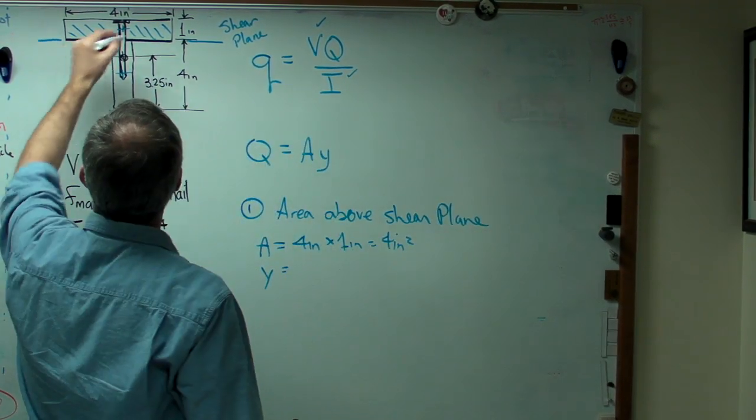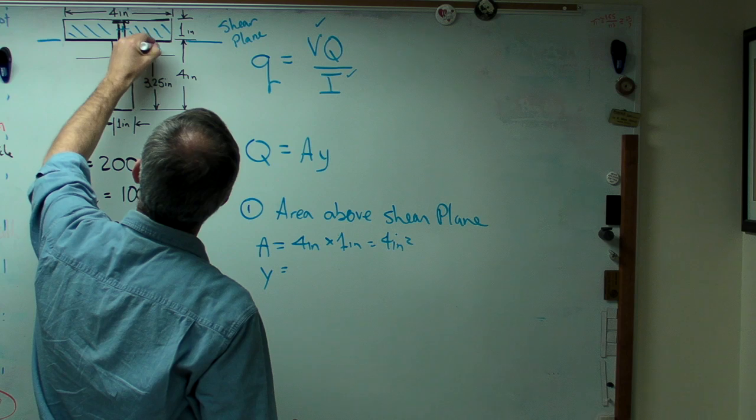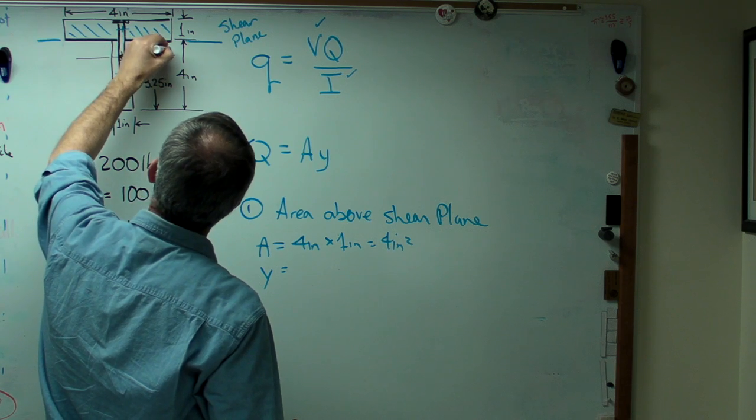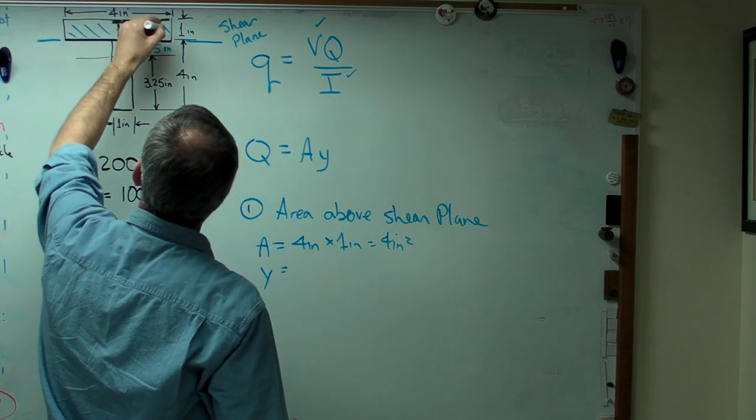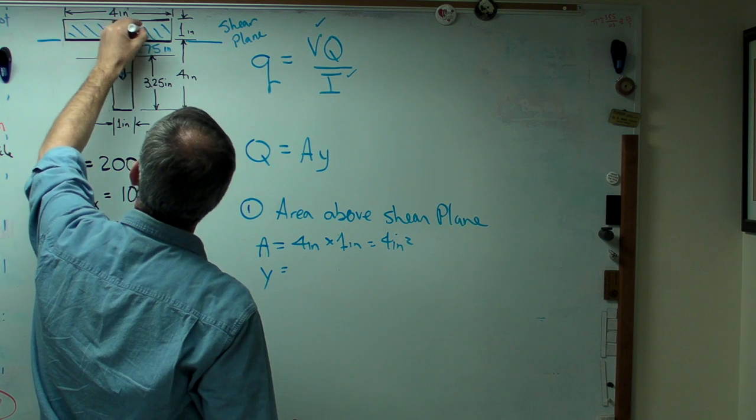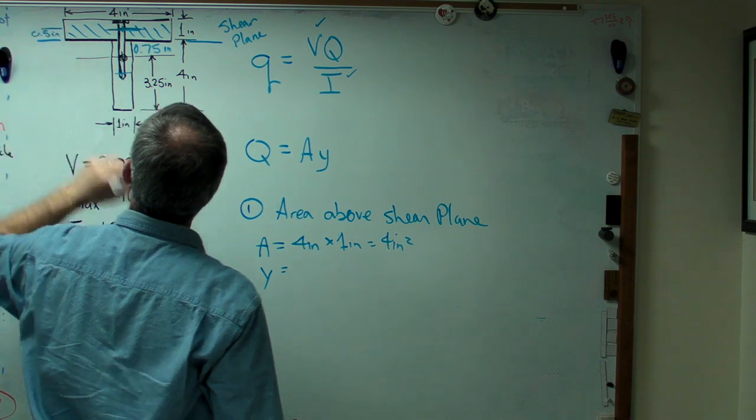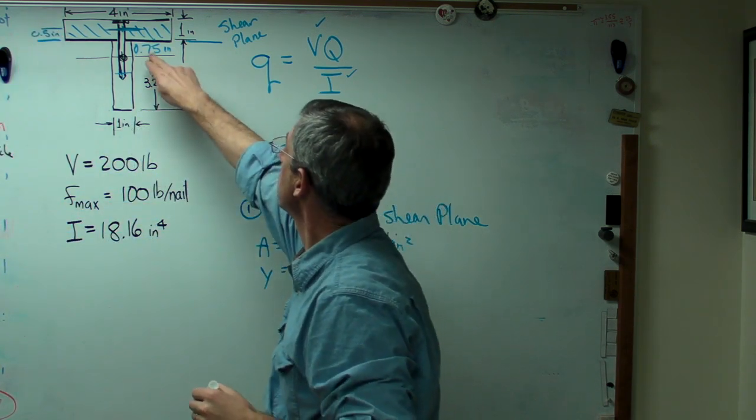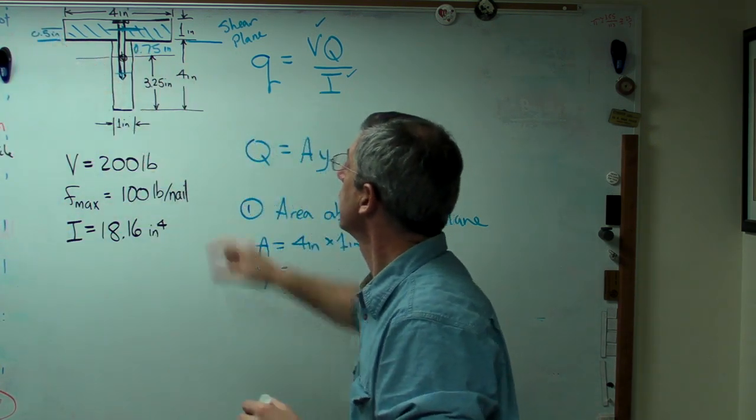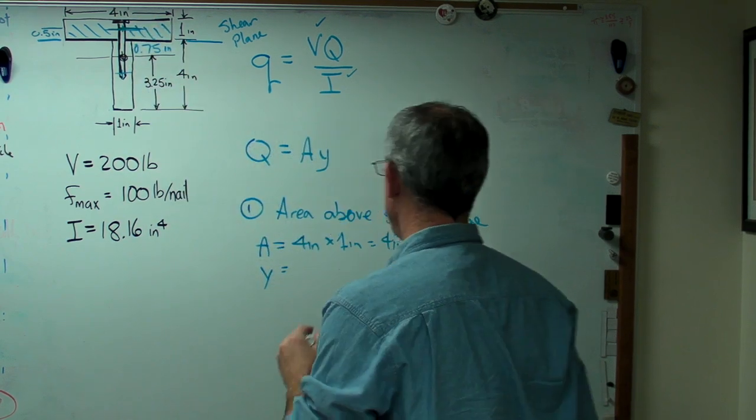Now, I'll fill in a couple of numbers here. This distance right there is 0.75 inches. And the centroid of that box is right in the middle of that box. And that's another 0.5 inches. So the total distance Y is this number plus that number. Form that distance. And that's an inch and a quarter.